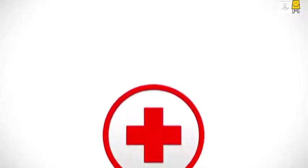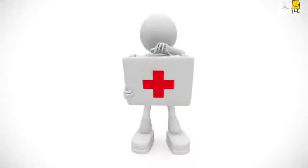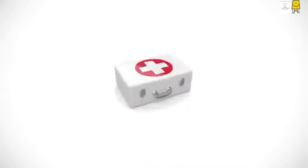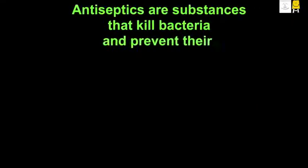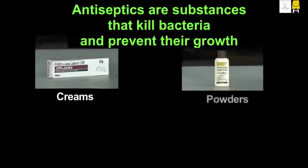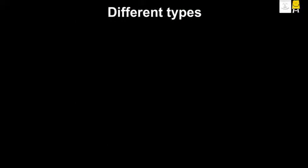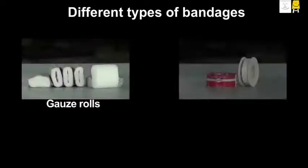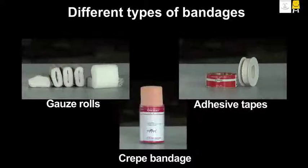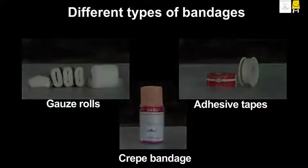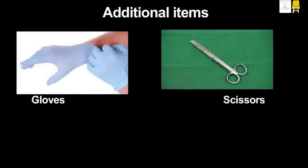There are three types of things in the box: antiseptics, meaning preventing the growth of disease-causing microorganisms, in the form of creams, powders, or liquids, which are used to clean the wound in order to prevent infection; bandages of different types, which can be put over a wound and wrapped around the affected area; and additional items such as gloves, scissors, and forceps.